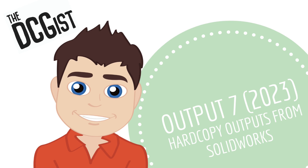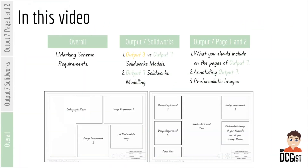In this video we're going to look at the overall marking scheme requirements. We're then going to look at the SOLIDWORKS element of output 7, how that compares to output 3 and some pointers as to how to model in SOLIDWORKS in output 7. And then we're going to look at the hard copy outputs that are on page 1 and page 2 of output 7, what you should include in those pages, the annotation that you're going to do there and the photorealistic images that go with that. And then finally we'll have a look at a suggested layout for output 7 page 1 and page 2.